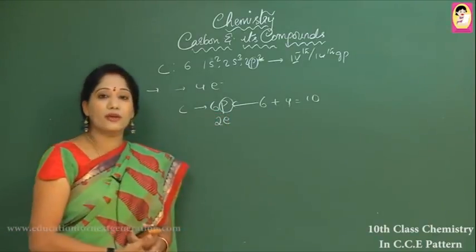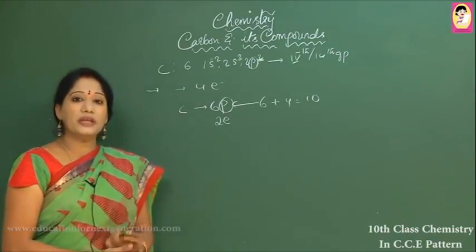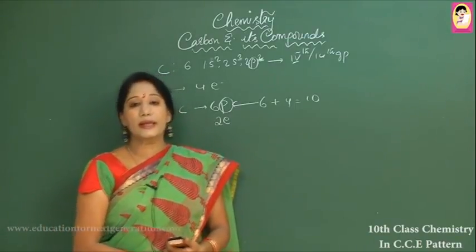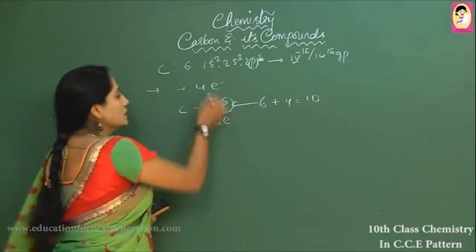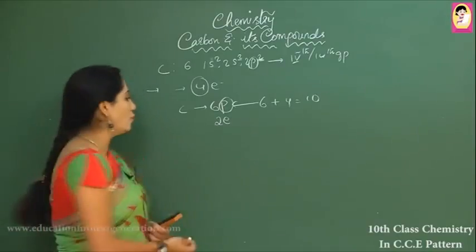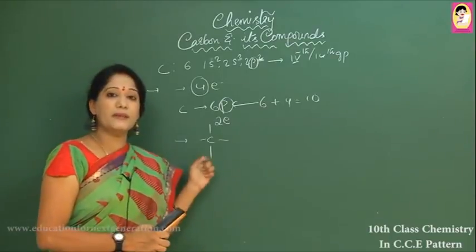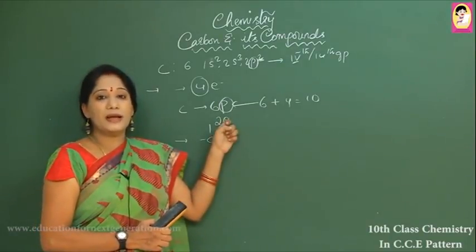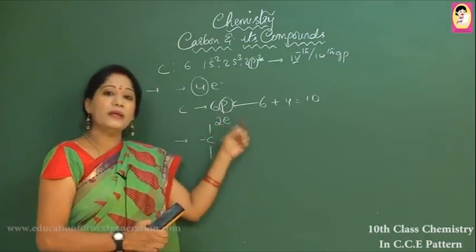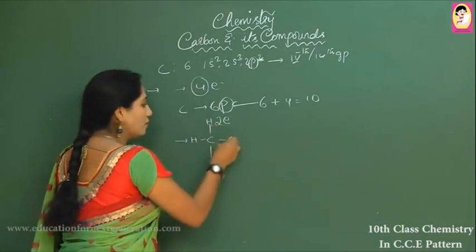Because of this, carbon tries to share electrons with other elements — it may be the same carbon atom or different atoms. This sharing allows it to gain stability. Due to the presence of four valence electrons, carbon has the capacity to form four covalent bonds, with the same carbon atom or with atoms like hydrogen, chlorine, or bromine.